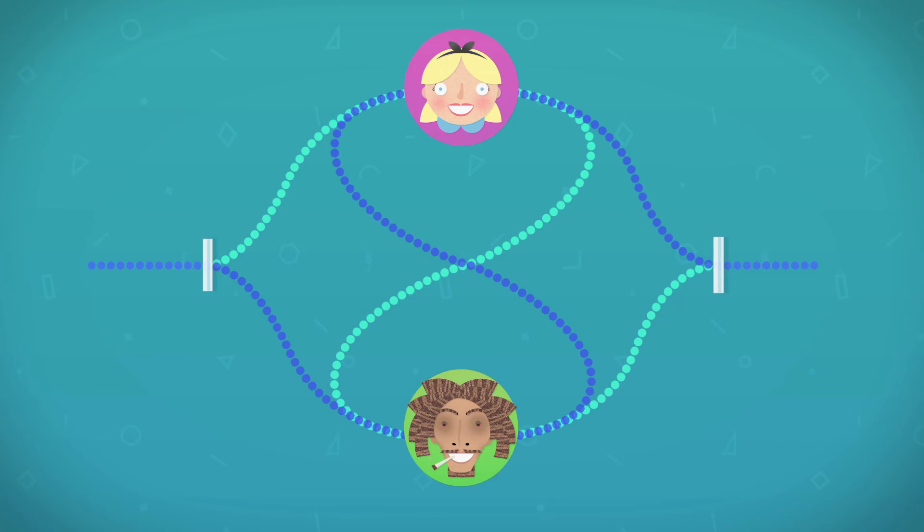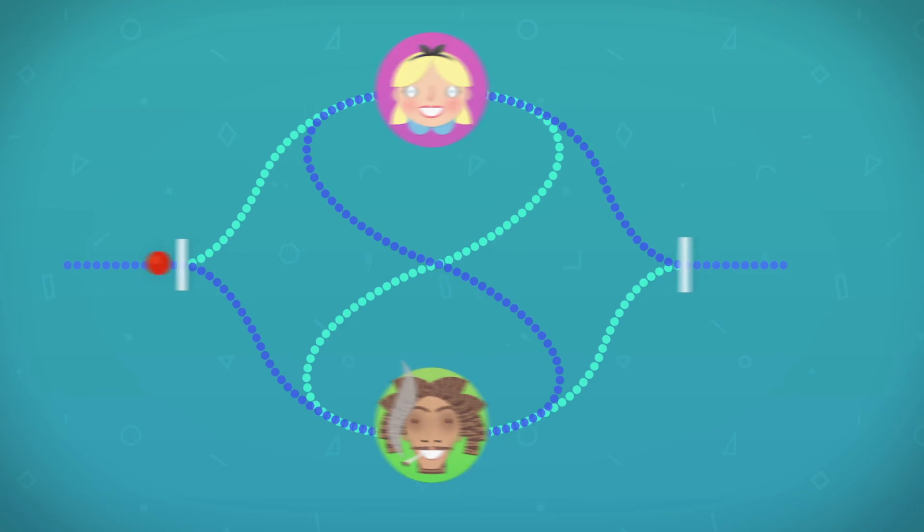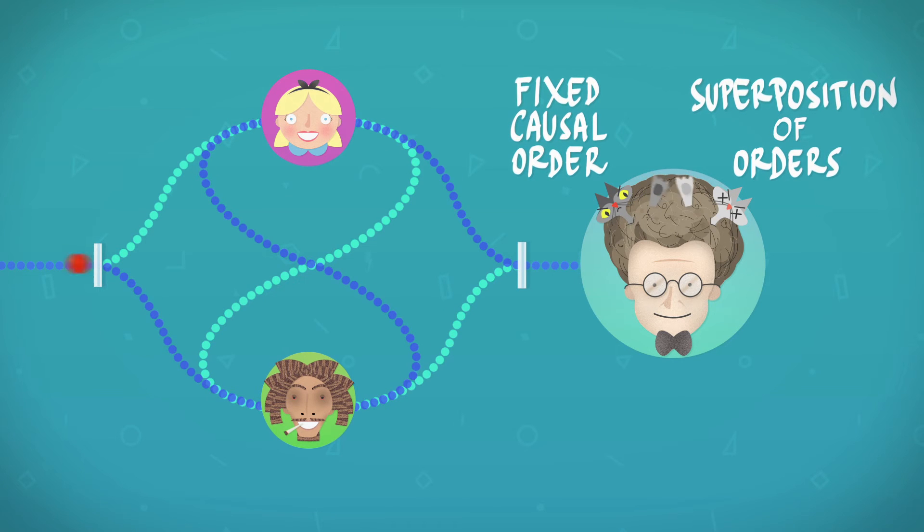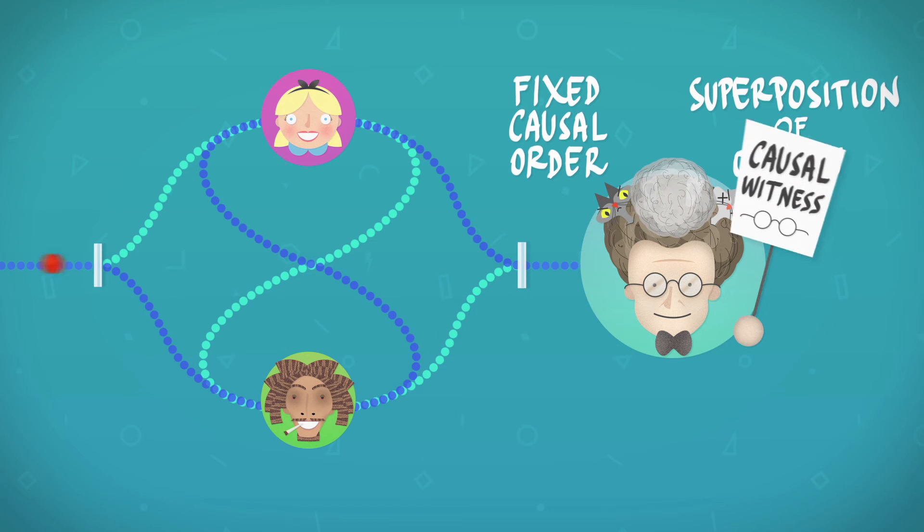We ask Alice and Bob to perform some operations on the photons they see, and then let the two paths interfere. There are some interference patterns that are impossible to mimic with a definite causal order. They are what we call a causal witness.